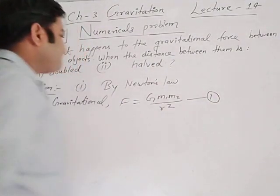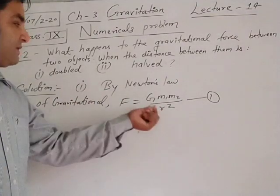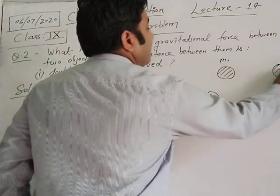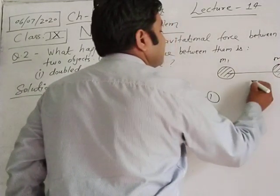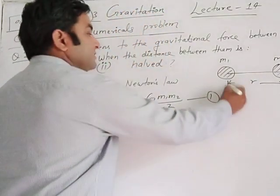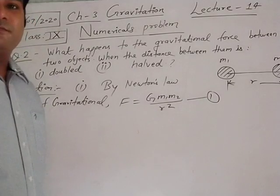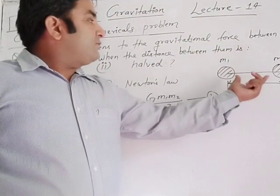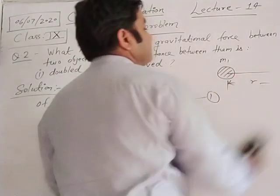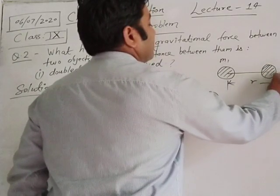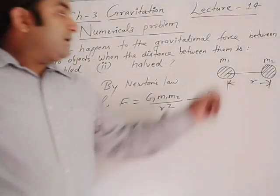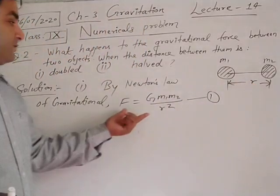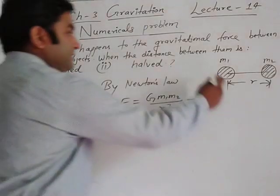First condition: here we have two objects — one having mass M1 and another having mass M2, with distance between their centers equal to R. When M1 and M2 are separated by initial distance R, the force is F equal to G M1 M2 upon R square.